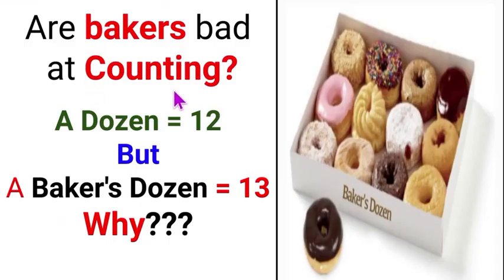Are bakers bad at counting? Kya baker logo ko ginti nahin aati? Unki counting itni kharab hoti hai? A dozen is equal to 12. Dozen toh 12 hote hain. But a baker's dozen is equal to 13. Aap is picture mein dekh sakte hain. Ye toh 12 donuts hain aur ek donut extra hai. 13. Toh ye ho gaya baker's dozen. Dozen mein toh 12 hain, par baker's dozen mein 13 aate hain.